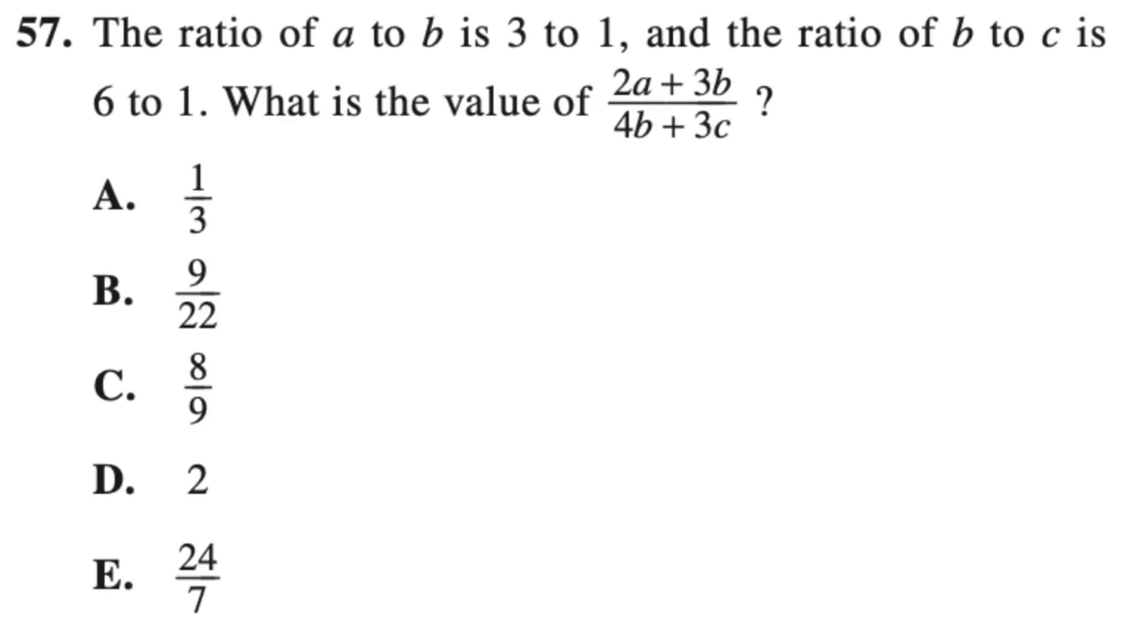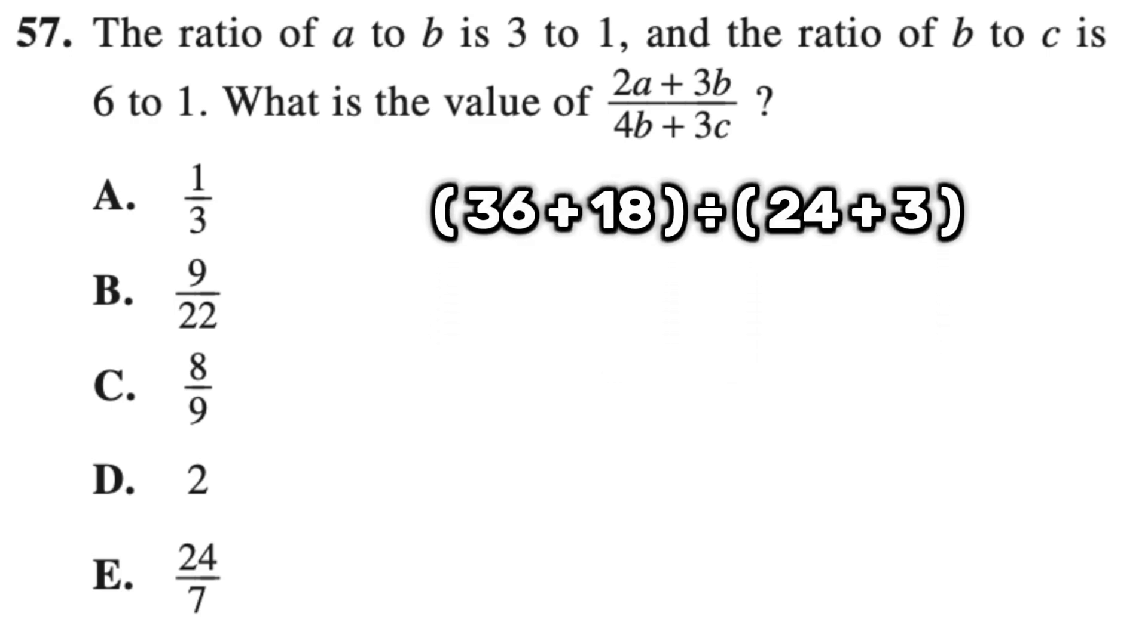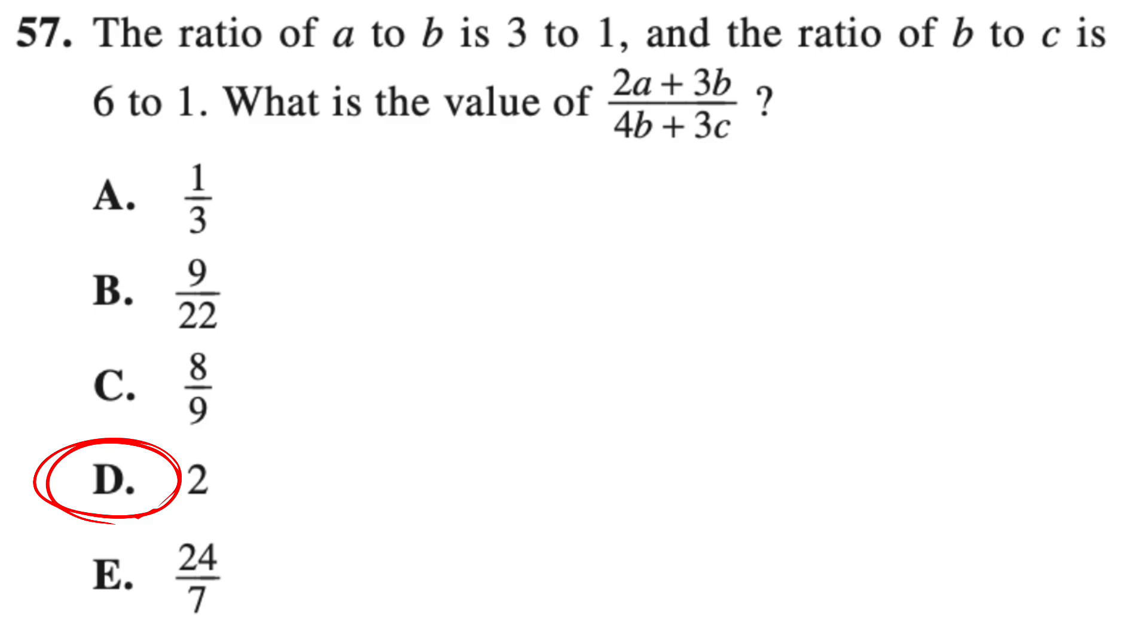Moving on to the next question. This is another great example of a plug and chug problem by just replacing the variables with a number. Say we replace C with 1. And since B is 6 times as big as C, B would be 6. And since A is 3 times as big as B, A would be 18. Now that we have those values, we can just plug it into the expression. And we get 36 plus 18 divided by 24 plus 3, which is 54 divided by 27, or just 2. Which is answer D. We just took this really hard problem and just made it super easy by just plugging in values for variables.